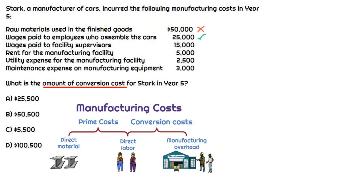How about wages paid to facility supervisors? We have supervisors in the manufacturing facility making sure production goes cleanly. They're involved in the production process but not directly working on it, so they're not direct labor — they're indirect labor. But indirect labor is part of manufacturing overhead, so that is going to be included in conversion costs.